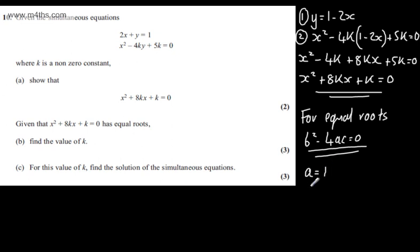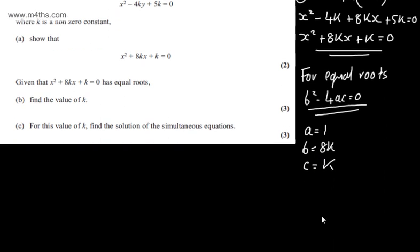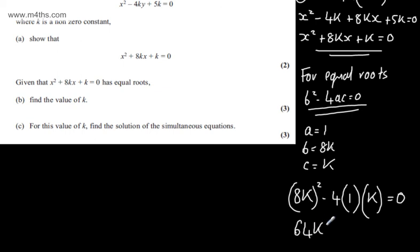a is going to be 1, b is going to be 8k and c is going to be k. So simply subbing this into the discriminant, we'll have 8k squared, that is b squared, minus 4 multiplied by a multiplied by c which is k and that gives us 0. So we have 64k squared minus 4k is equal to 0.